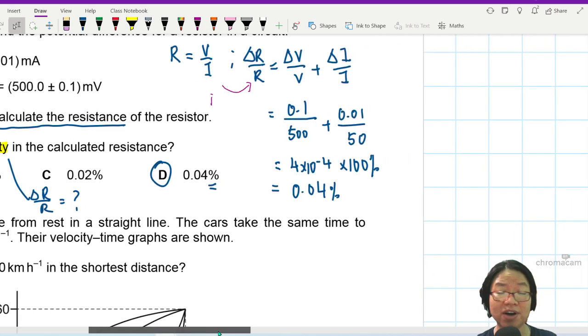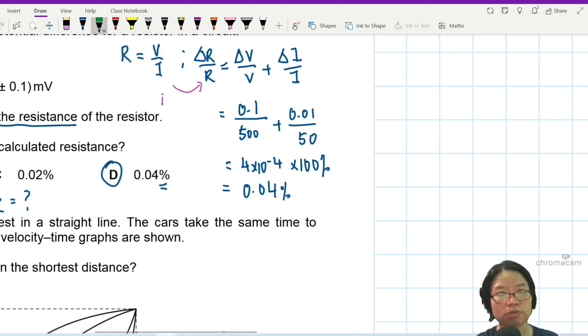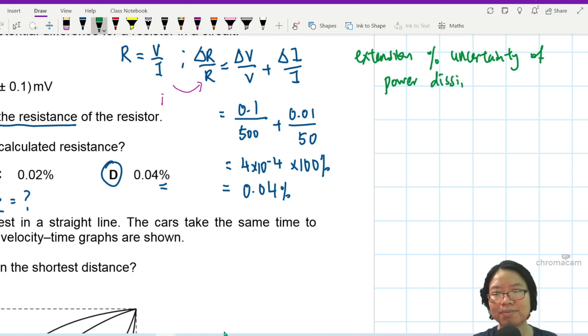If let's say, they ask you to find power or the percentage uncertainty of power, what will change in your equation? So let's say, extension right here. What is the percentage uncertainty of power dissipated? Yes, I'll modify the question. Power dissipated in the resistor.